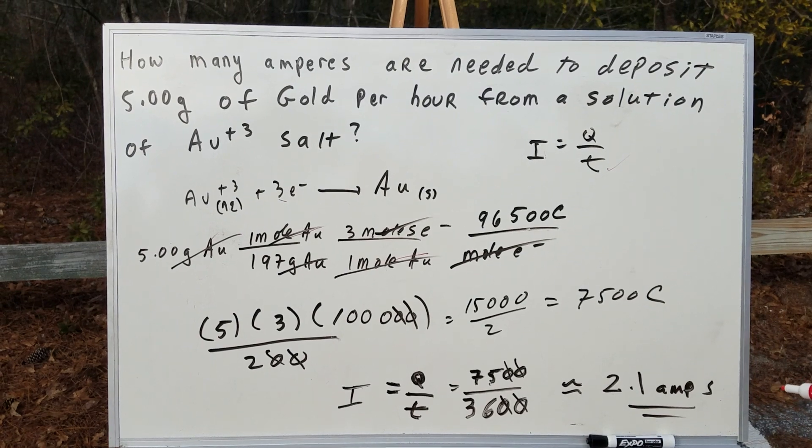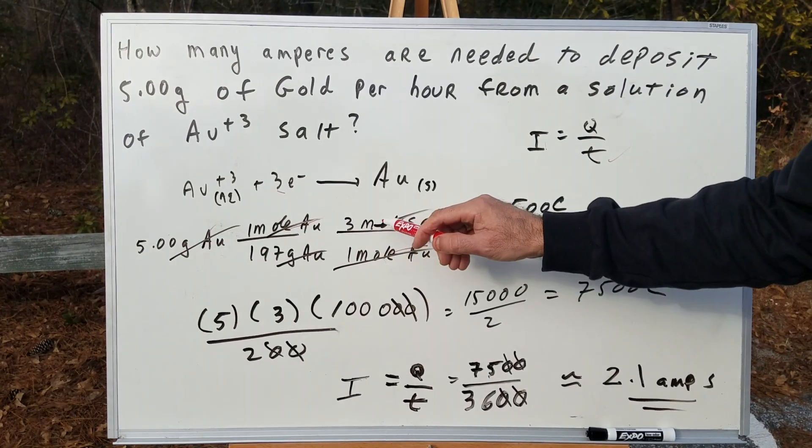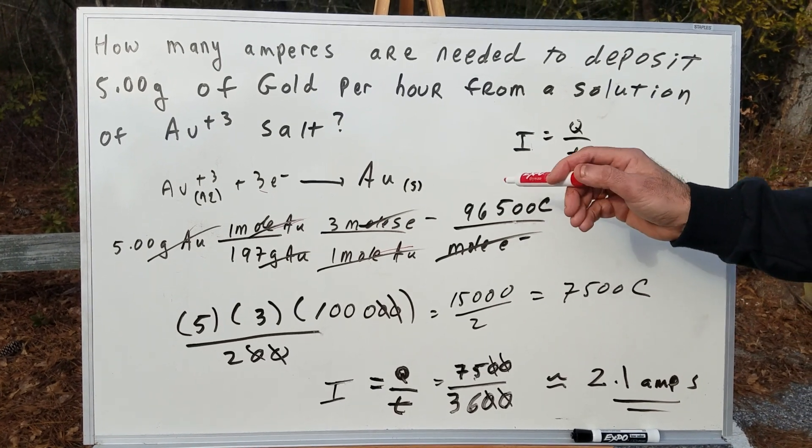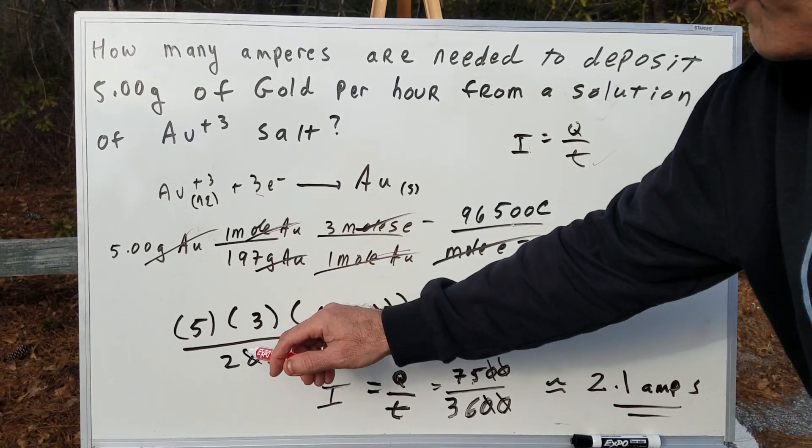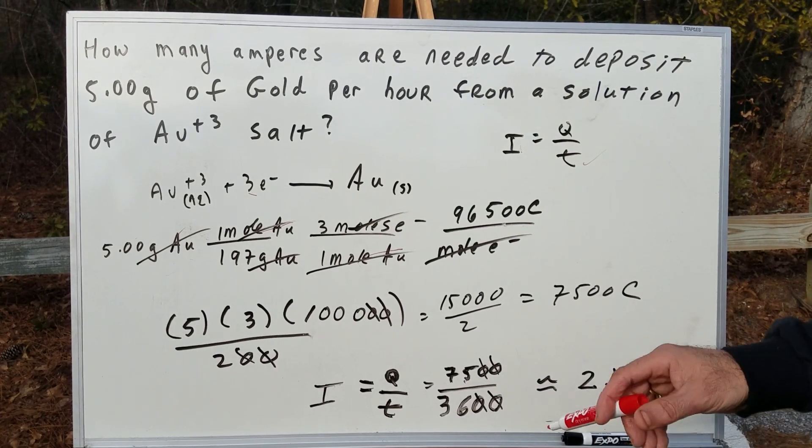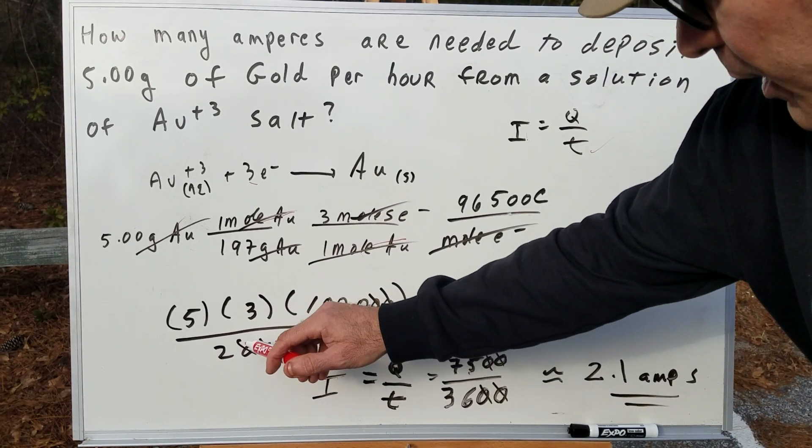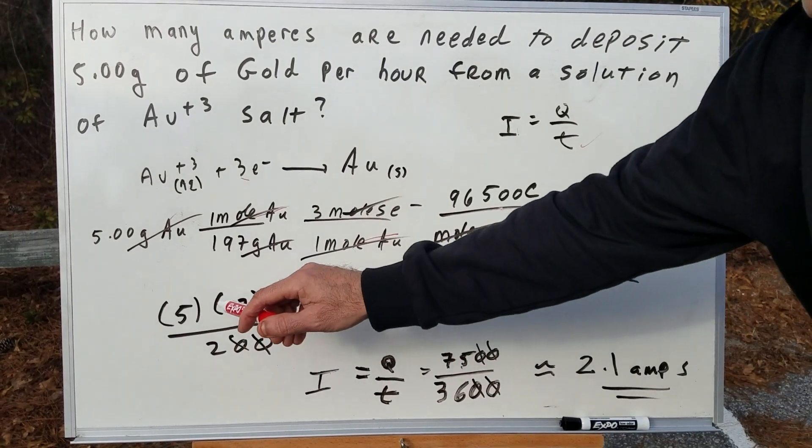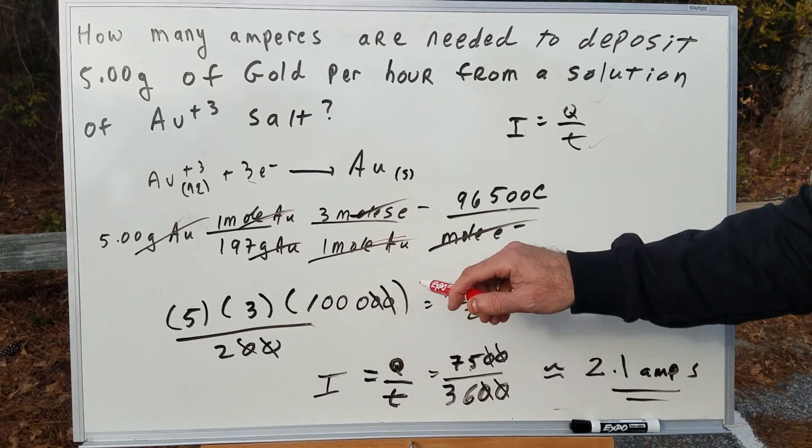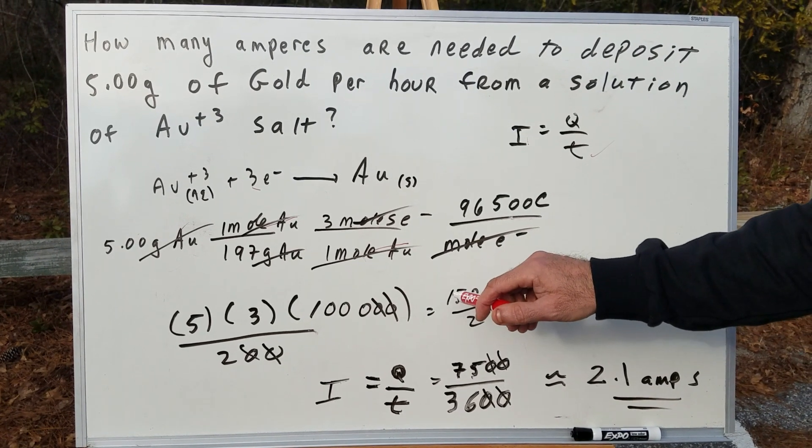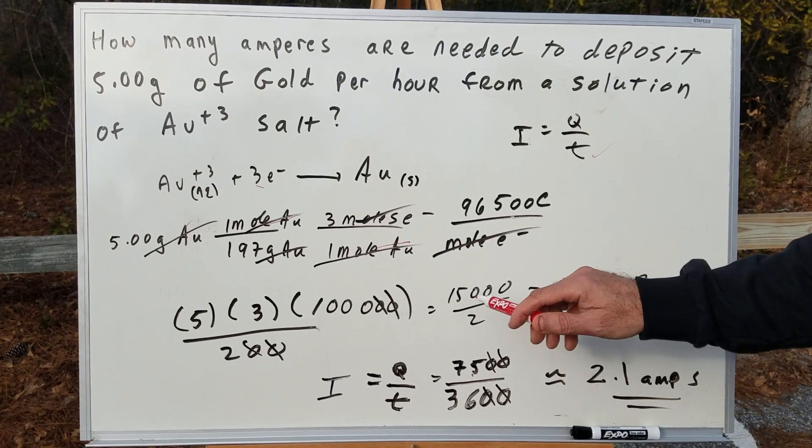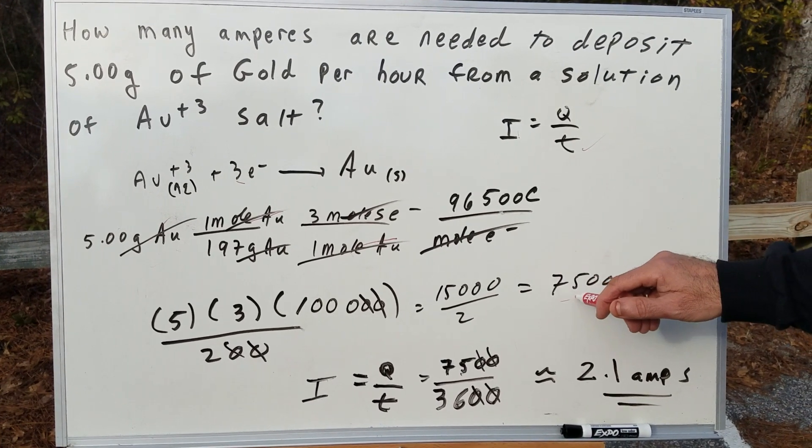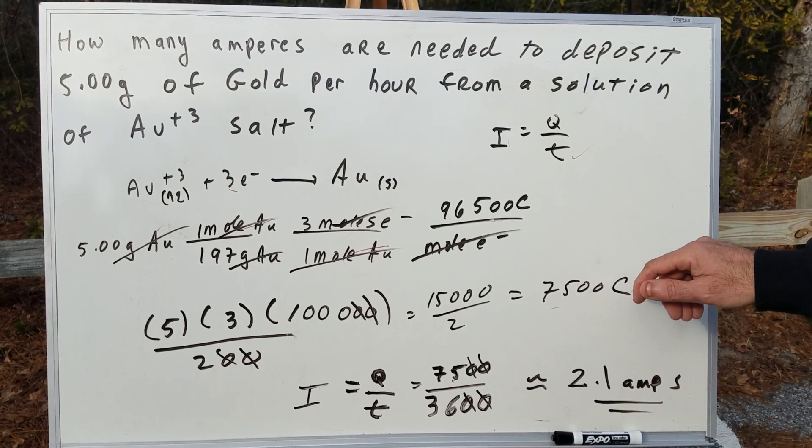What we're going to do here is multiply the 5 by the 3. Notice 96,500 is roughly 100,000. 197, I round off to 200. I love bopping out zeros. If I take two zeros from here and two zeros from here, that gives me 5 times 3, which is 15, times 1,000, which is 15,000. 15,000 over 2, and I haven't done too much rounding off. So I feel pretty confident that 7,500 puts me very close to the actual value in coulombs.